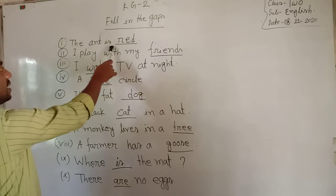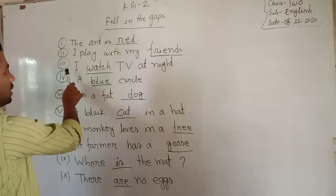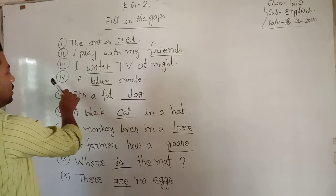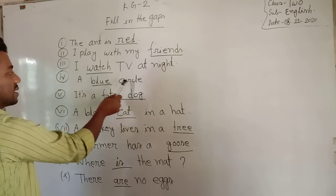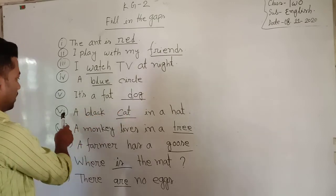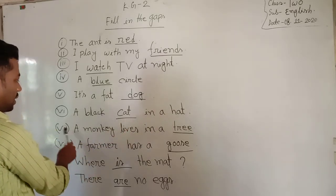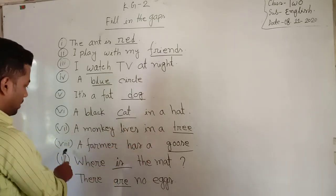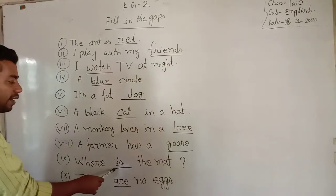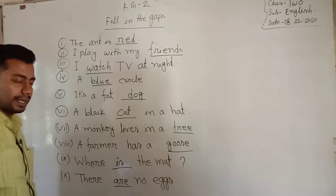The ant is red. I play with my friends. I watch TV at night. It's a blue circle. It's a pet dog. A black cat in a head. A monkey lives in a tree. A farmer has a goose. Where is the mate? There are no eggs.